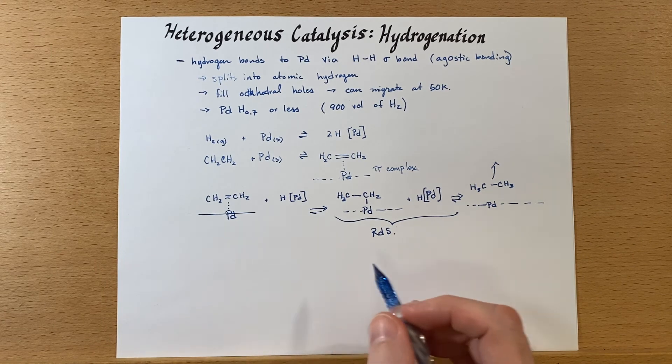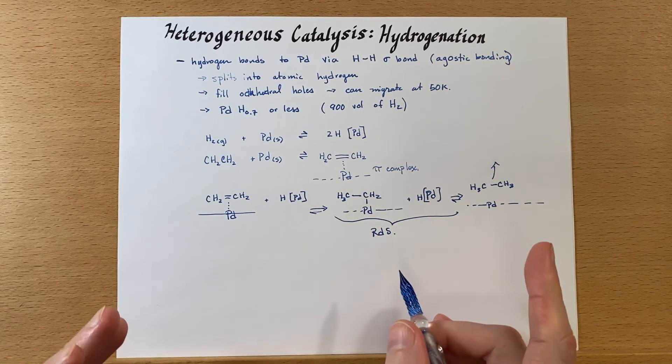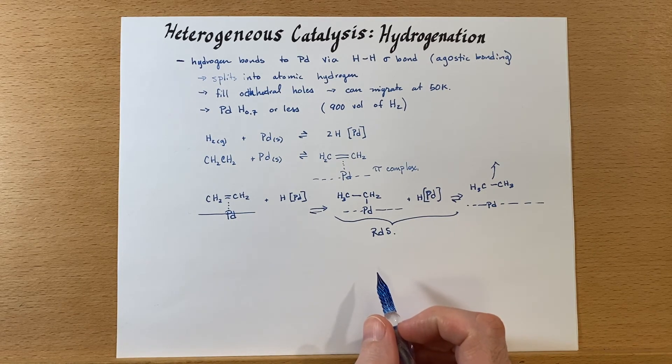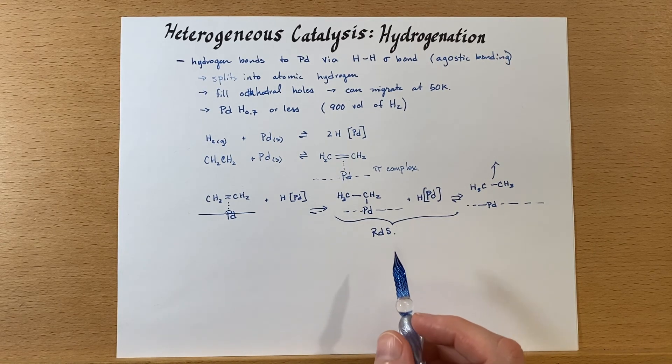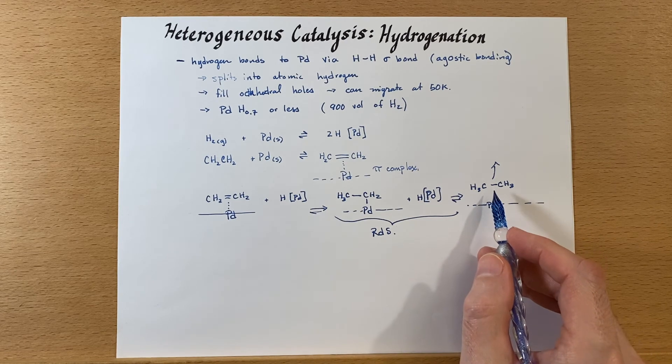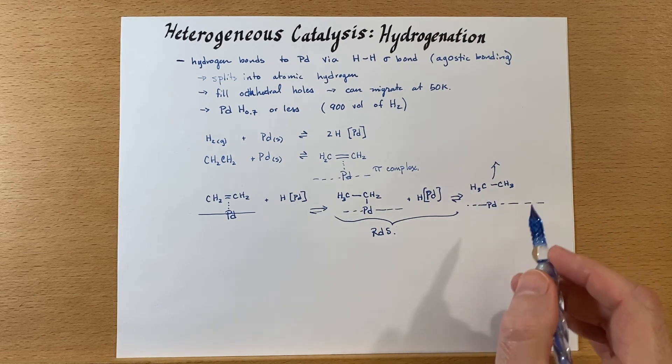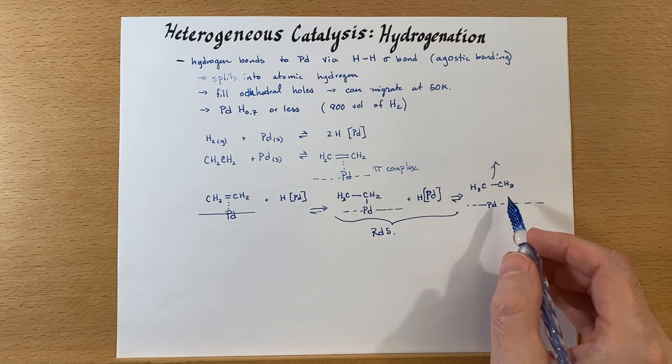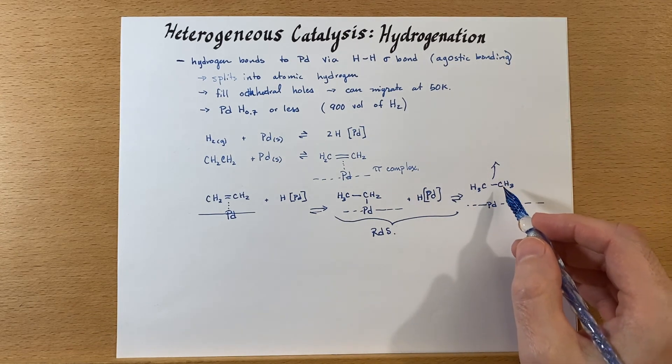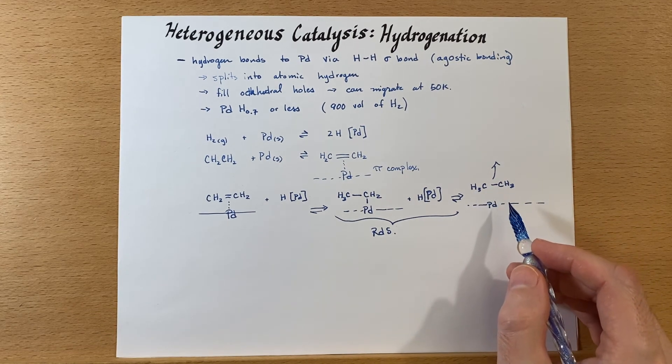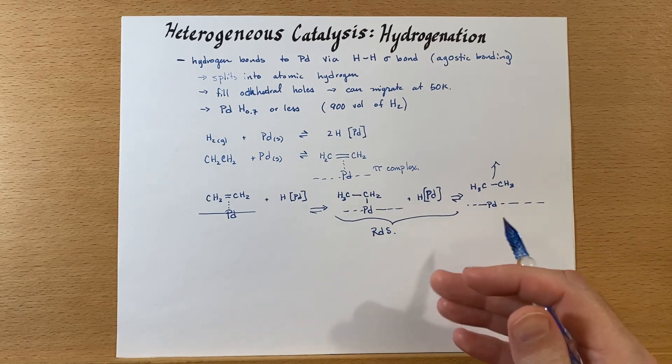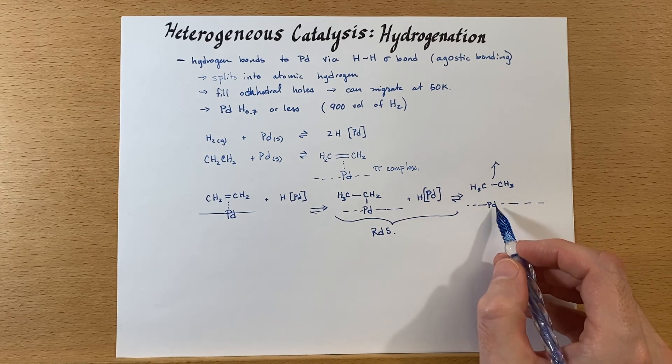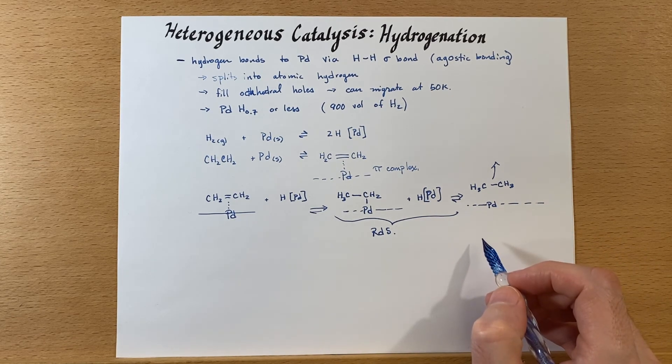Now overall this reaction is exothermic and it's often quantitative. As long as you supply enough hydrogen, you should be able to hydrogenate all of the bonds. Once that does that, if you do remove the product, then you could keep it from going back. And that should be relatively simple considering that this is a solid catalyst.